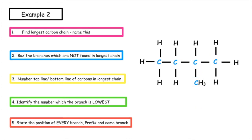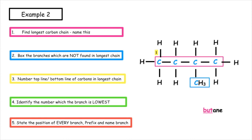Example two: we need to find the longest carbon chain, which we can see is four carbons long, so the name of that alkane would be butane. We put a box around the branch not found in the longest carbon chain and number the top and bottom carbons in reverse order. The branch could be on position three or position two - the lowest number is position two. The branch has only one carbon so it's a methyl branch. The name of this alkane is 2-methylbutane.